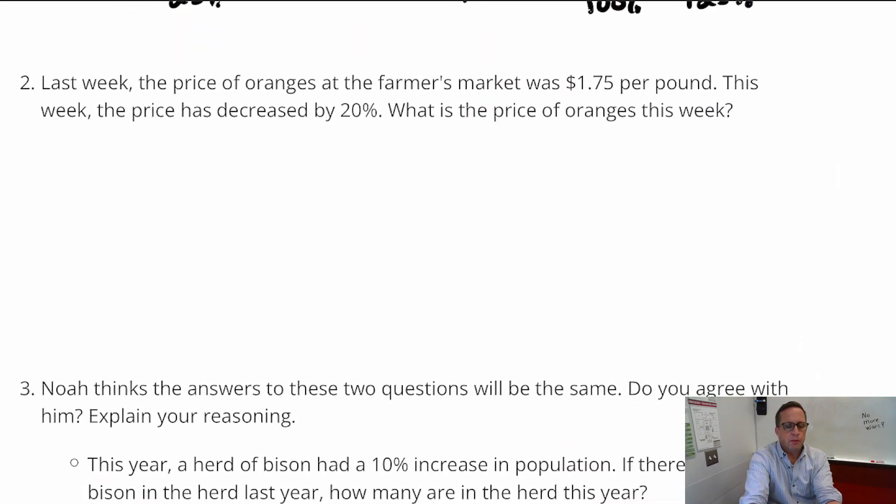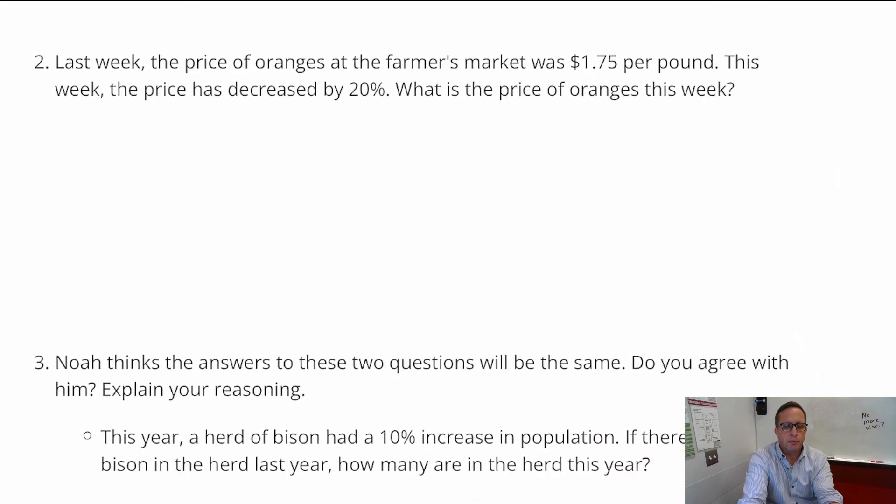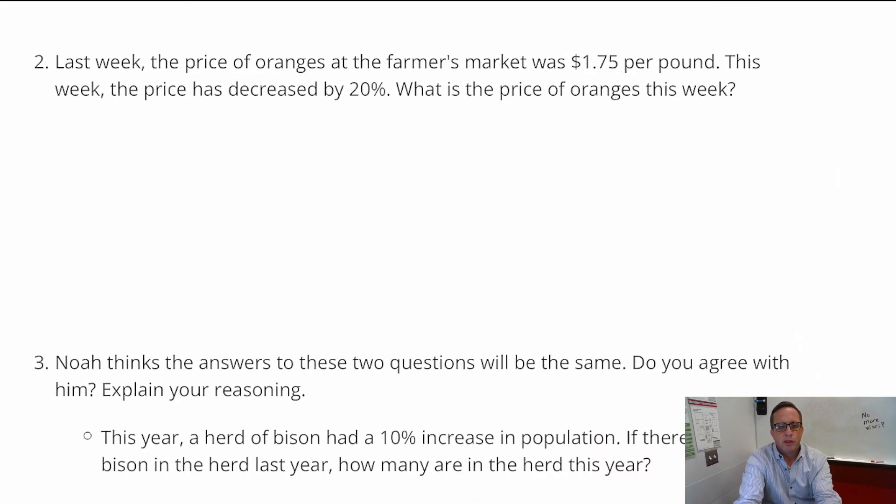Alright, number two. I'm not going to use a double number line for this one. Let's just do this using percents and decimals. So for number two, last week, the price of oranges at the farmer's market was $1.75 per pound. This week, the price has decreased by 20%. What is the price of oranges this week?